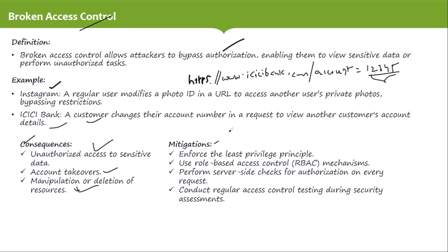Mitigations for Broken Access Control include enforcing the least privilege principle. Least privilege means giving a user only the access they actually need — for example, read-only access, read-write access, or read-write-execute access — based solely on what their role requires.